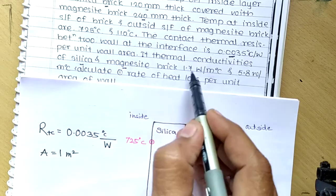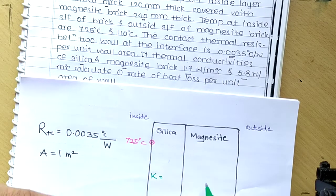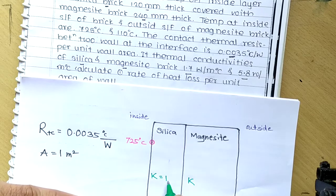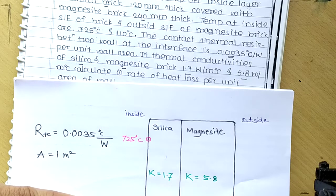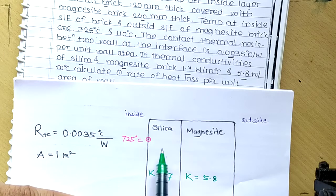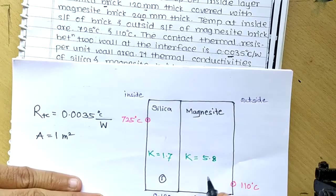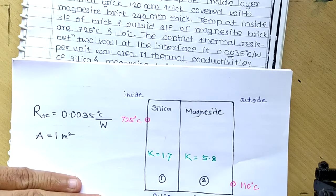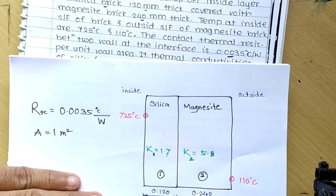Let me label the thermal conductivities on the diagram. Silica thermal conductivity is 1.7 and magnesite is 5.8. I am not writing units here to avoid complication. Let's consider silica as material number 1 and magnesite as material number 2, so this is k1 = 1.7 for silica and k2 = 5.8 for magnesite.